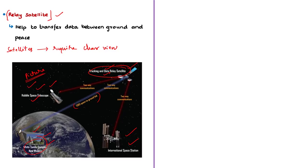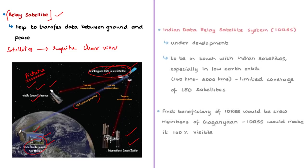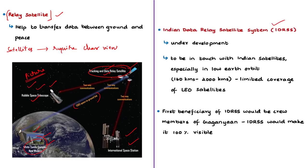India has started working on its relay satellite series. The Indian Data Relay Satellite System — IDRSS — is planned to track and be constantly in touch with Indian satellites, especially those in low earth orbits. There are different types of orbits based on their altitudes: low earth orbit, medium earth orbit, and high earth orbits.